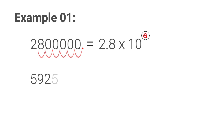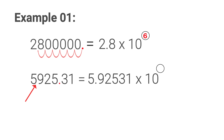Look at this example: five thousand nine hundred and twenty-five point three one. We first move the decimal point next to the first digit, that is next to five, so our number less than ten becomes five point nine two five three one. In this case the decimal point has gone forward passing three digits, so the power of ten is three. Our answer becomes five point nine two five three one into ten to the power three.